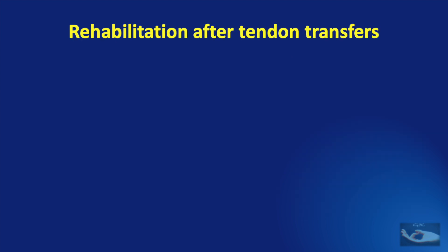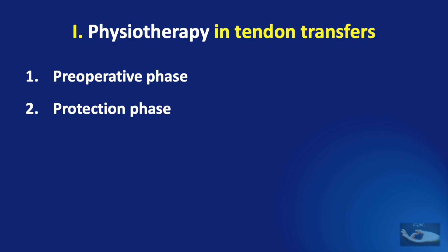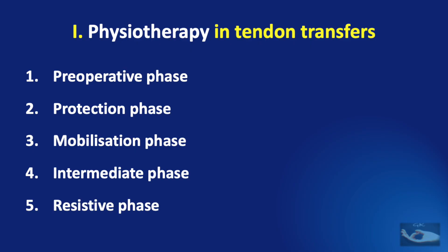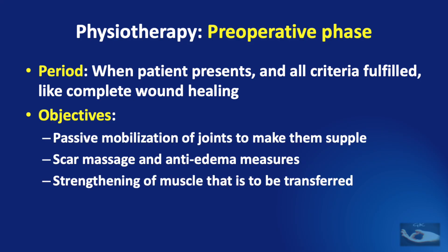Rehabilitation after tendon transfers also utilizes the modalities of physiotherapy, splints and electrical stimulation. There are 5 phases in the physiotherapy protocol: the pre-operative phase, the protection phase, the mobilization phase, the intermediate phase and the resistive phase. The pre-operative phase is followed when the patient presents and all criteria are fulfilled, such as complete wound healing. The objectives in this phase are to provide passive mobilization of joints to make them supple, scar massage, anti-edema measures and strengthening of the muscle that is to be transferred.